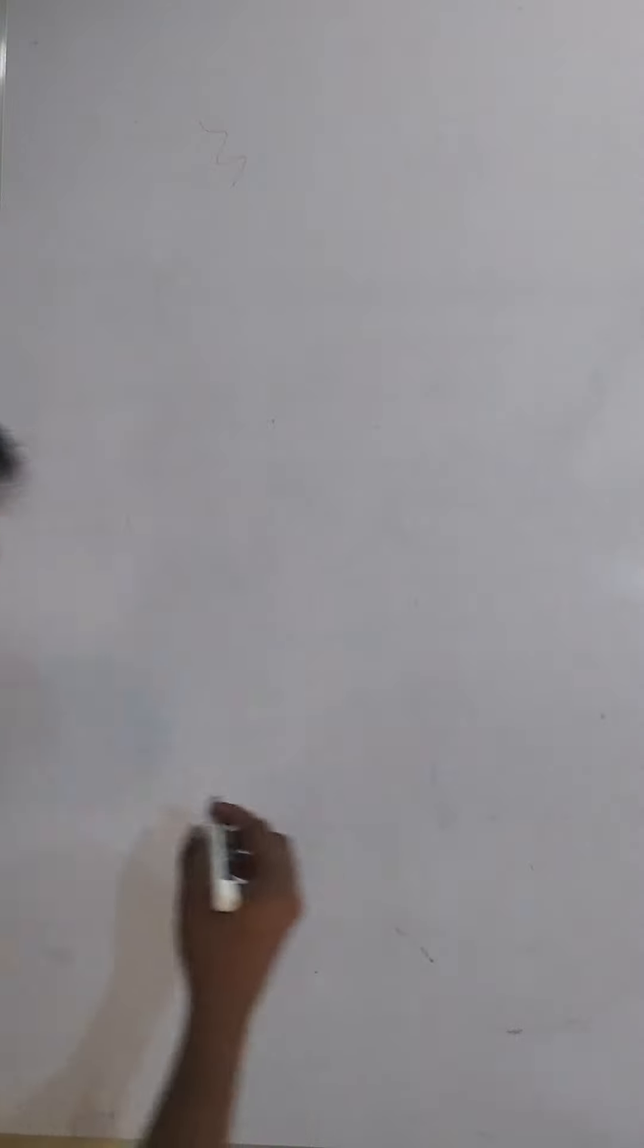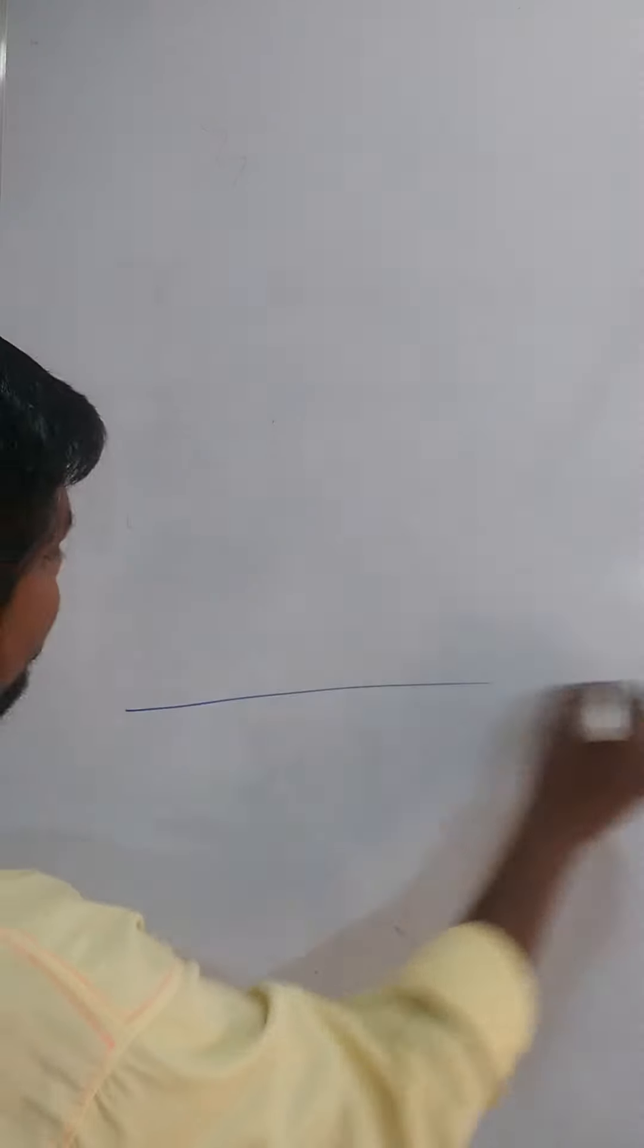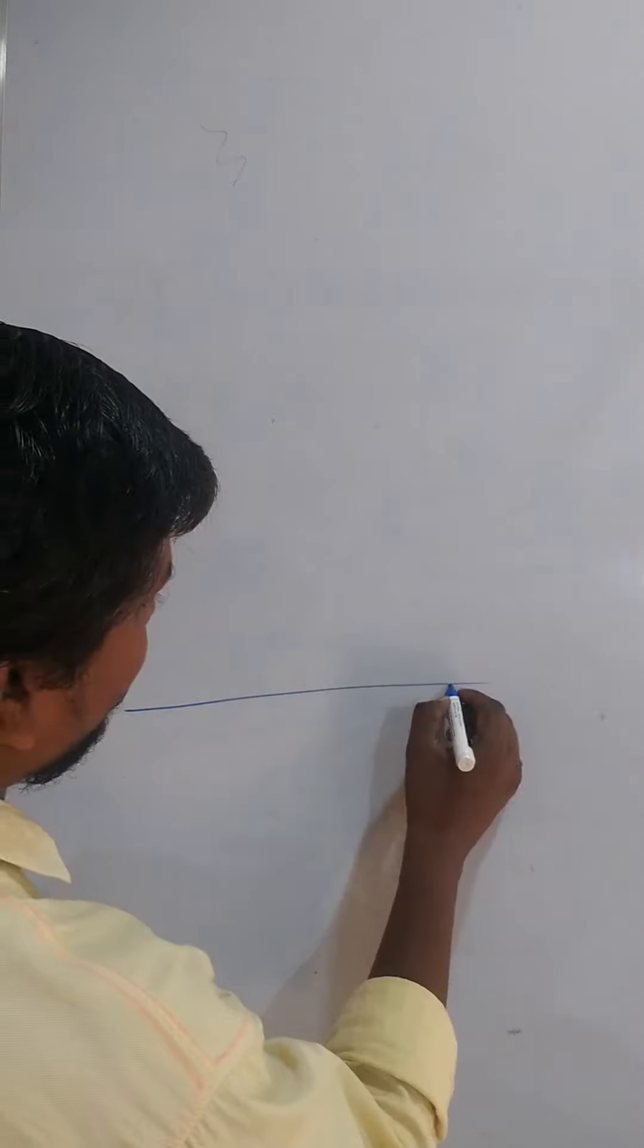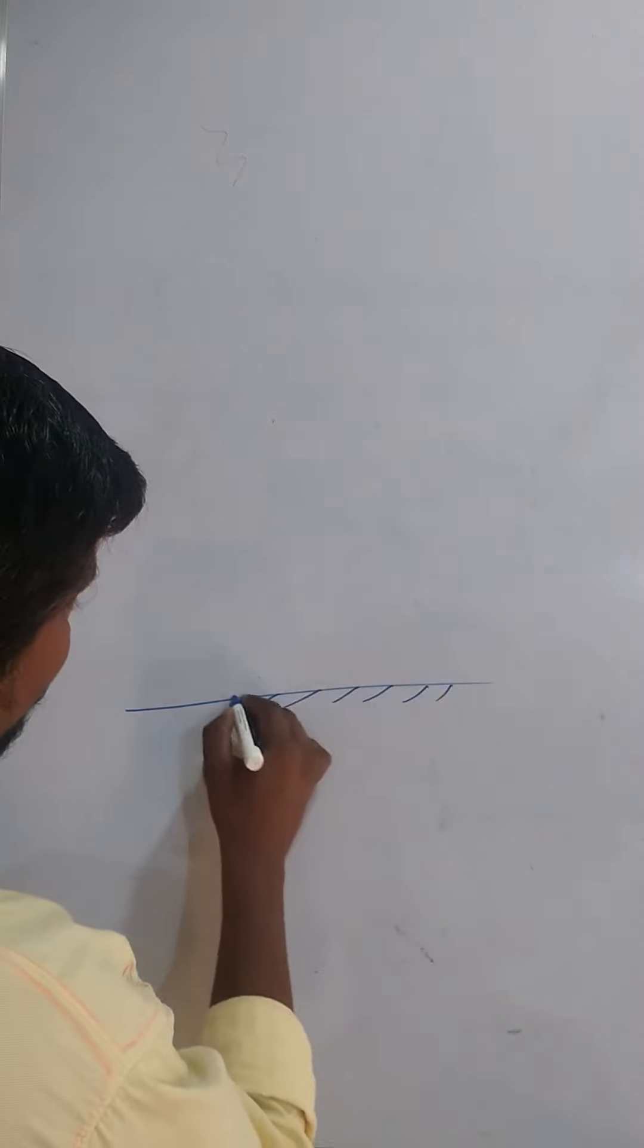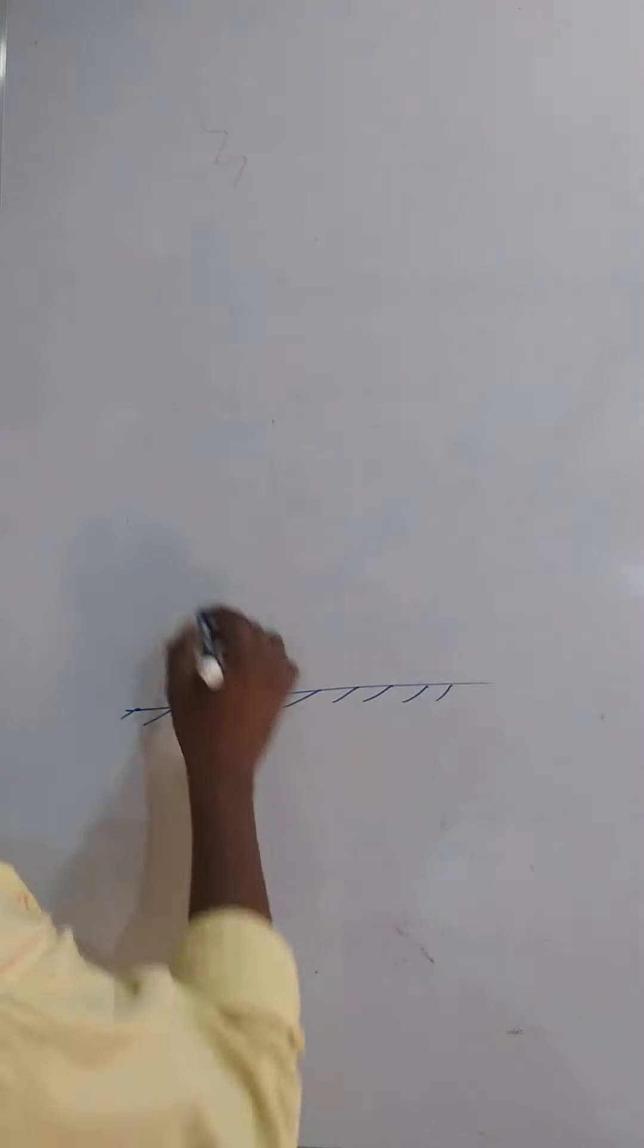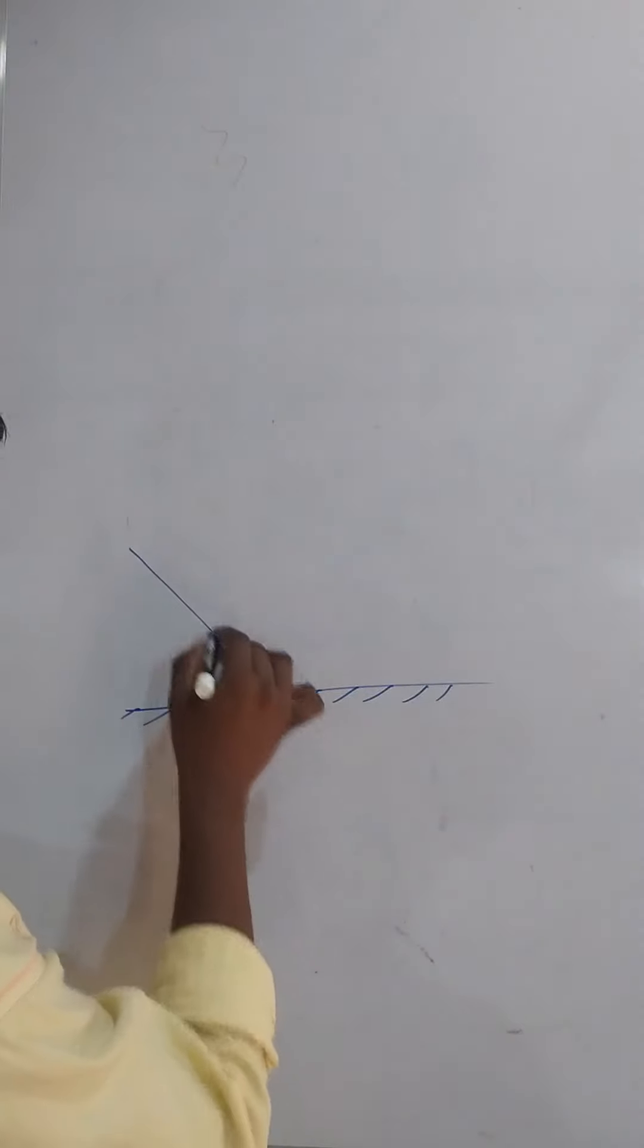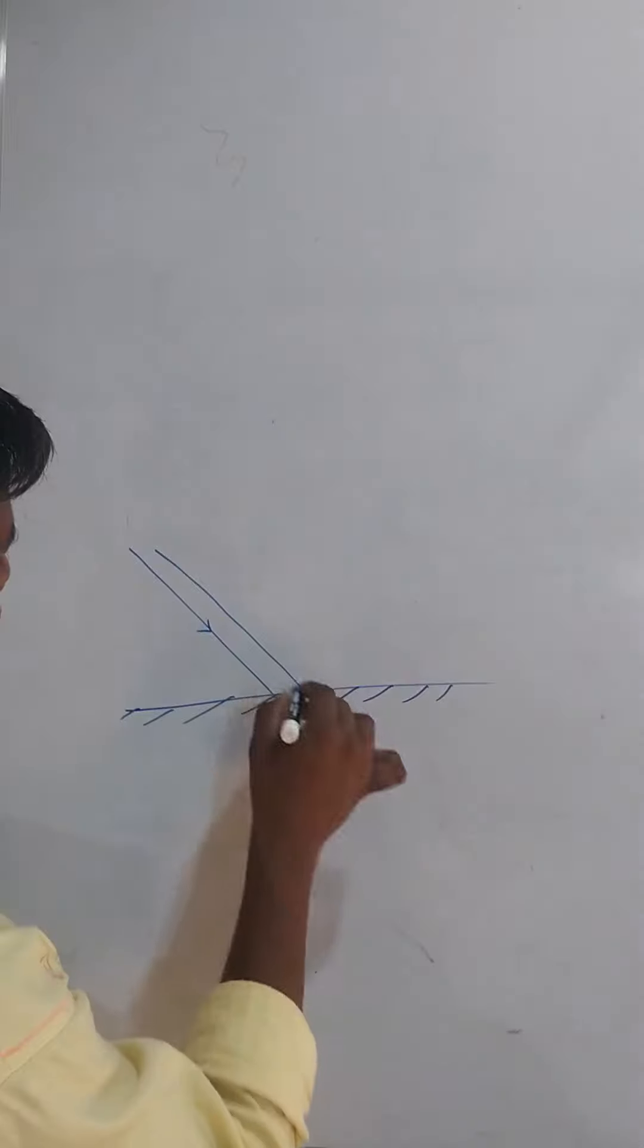What is reflection of light? So here you can observe when you are considering a plane surface or plane mirror, when parallel beam of light incident on it, this is a parallel beam.